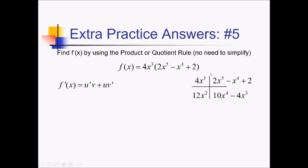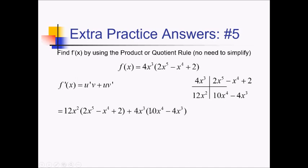Using the ribbon to multiply things out: for my first term I've got 12x squared times (2x to the fifth minus x to the fourth plus 2). And then going the other way for u v prime, I've got 4x cubed times (10x to the fourth minus 4x cubed). They said I don't need to simplify, so I'm going to leave that the way it is.